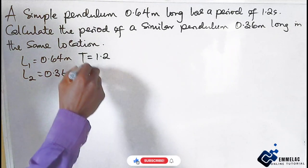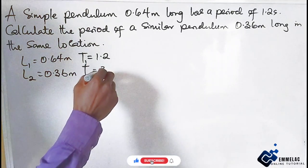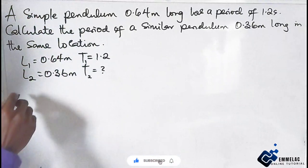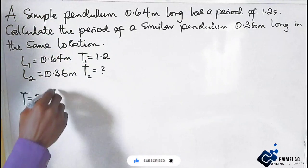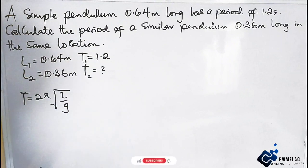We have T2 to find. Now let us recall that period is given as T equals 2π times the square root of L over g.